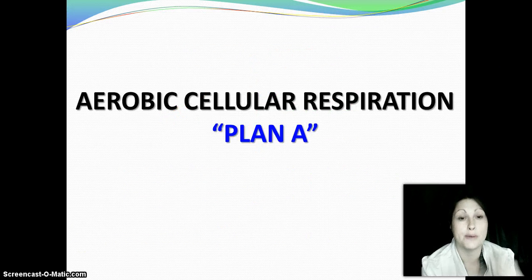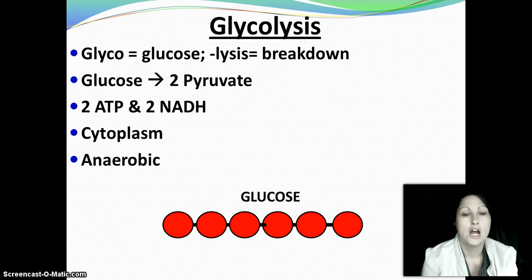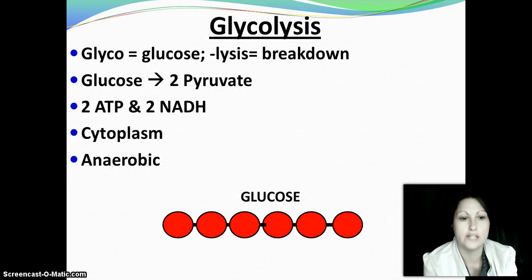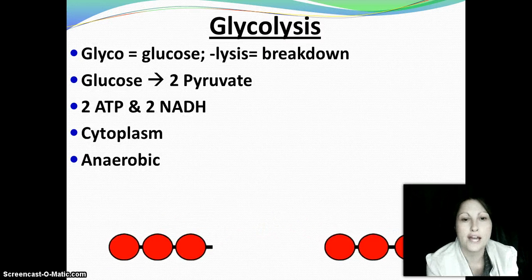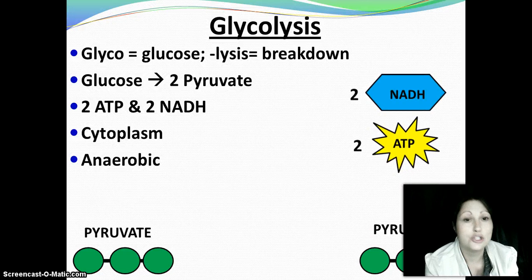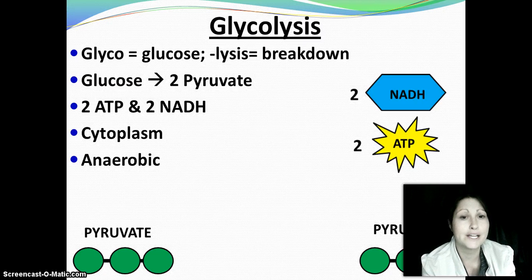Aerobic cellular respiration — remember, that's the one we have to have oxygen for, our plan A, our ideal way of making energy. Our first step is glycolysis, and literally this means the breakdown of glucose. Glucose is sugar — it's in the food that you eat. That glucose is going to be broken down into two pyruvate molecules. You're going to make two ATP, which is our cell energy, and then two NADH — remember, that's one of our shopping carts. Because glycolysis is anaerobic, it happens in the cytoplasm of the cell.